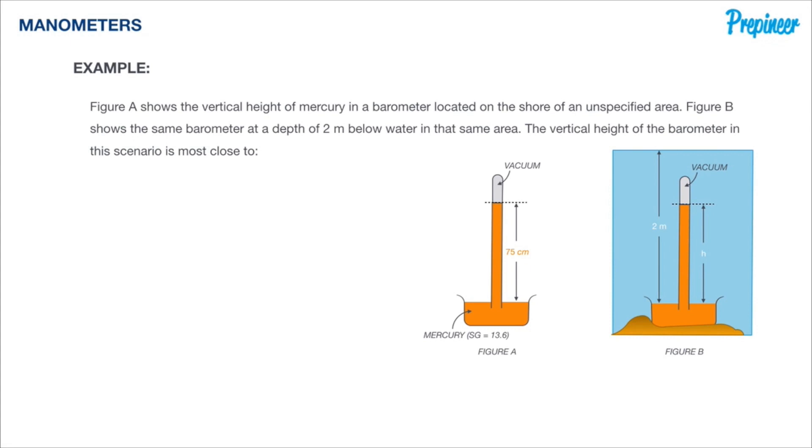Alright, so it's looking for the vertical height of the barometer, which is denoted with H, when it's two meters below water.